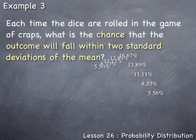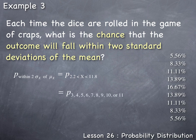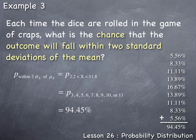The probability that the outcome will fall within two standard deviations of the mean means the outcome must be somewhere between a 3 or 11 when the dice are rolled in the game of craps. Since any one of these values is part of the answer, and we're talking about any one or the other — using 'or' — we add the individual probabilities. Adding up all the probabilities gives us a total of 94.45%.